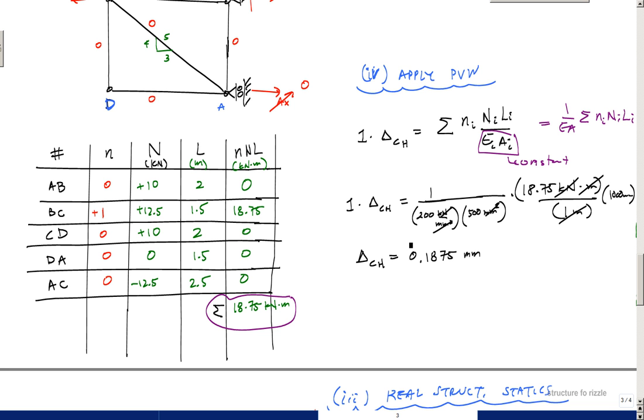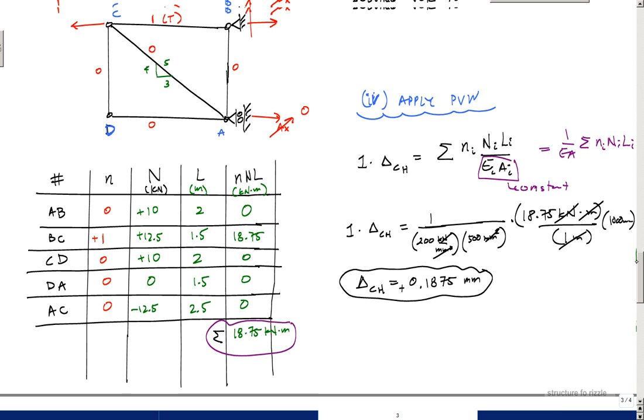Because this was a positive result, that means the direction in which our virtual force was applied matches the actual direction of the joint C motion. So that means joint C actually moved 0.187 millimeters to the left. Hopefully that was fun and enjoy, see ya.